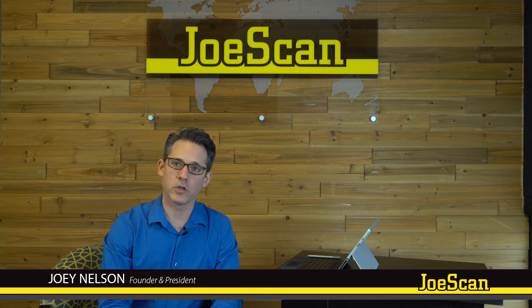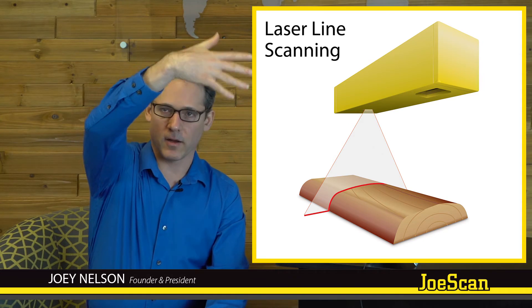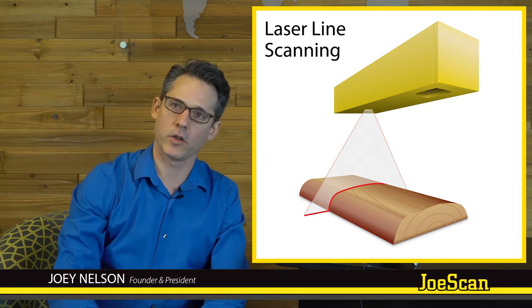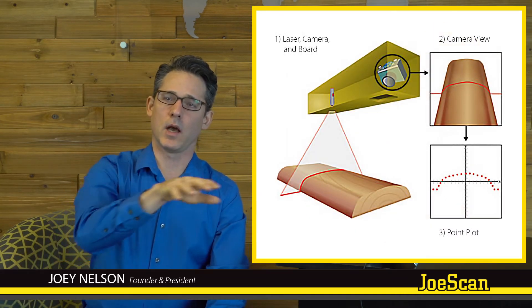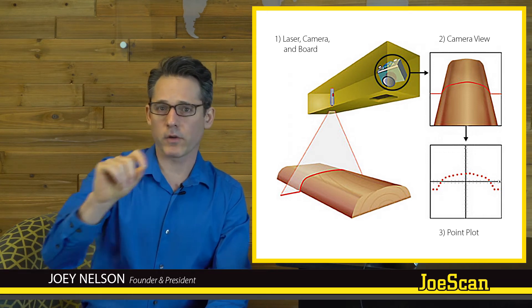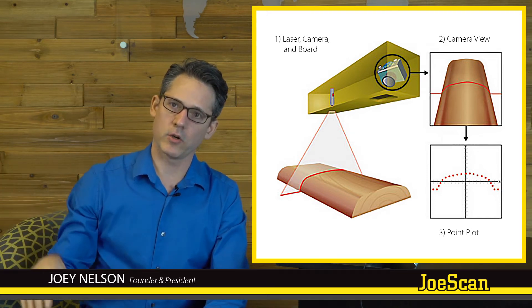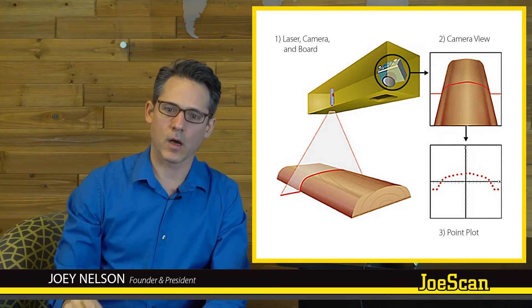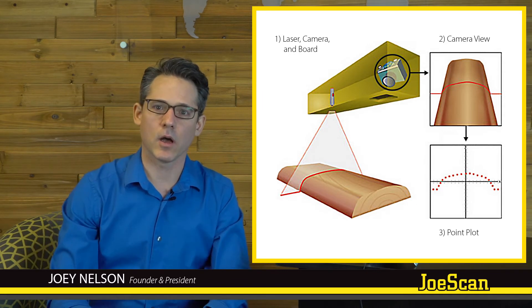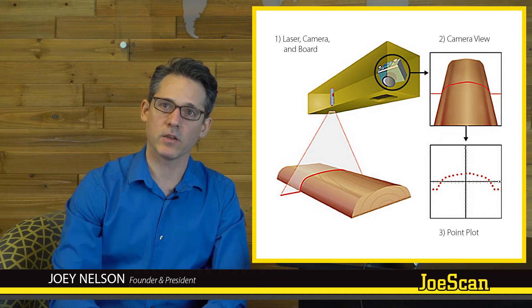The most common technology used in sawmills is laser line scanning. It uses a laser to project a fan of light that puts a line down onto the surface of a log or board. If you look at that line from an angle, it'll have a curved shape. You then image it onto a camera and measure exactly where that curve goes, figuring out the surface of the log to sub-millimeter accuracy, and generate an entire 3D model for the whole log.